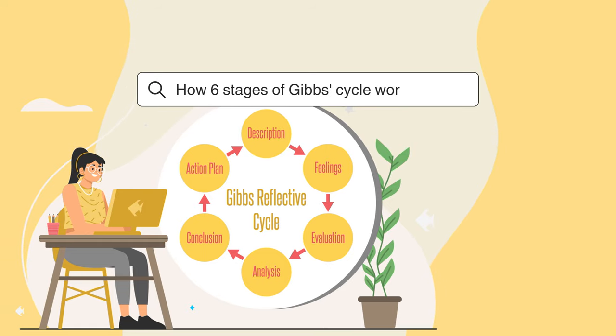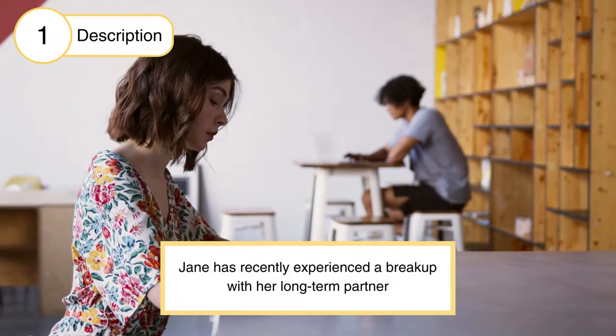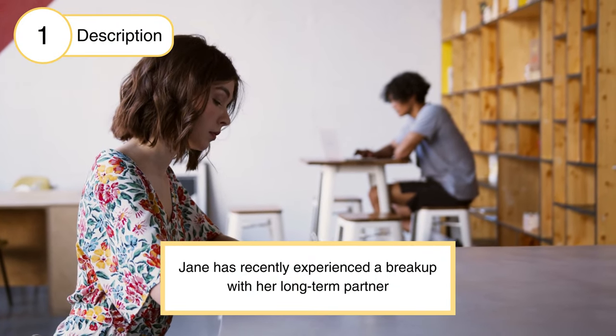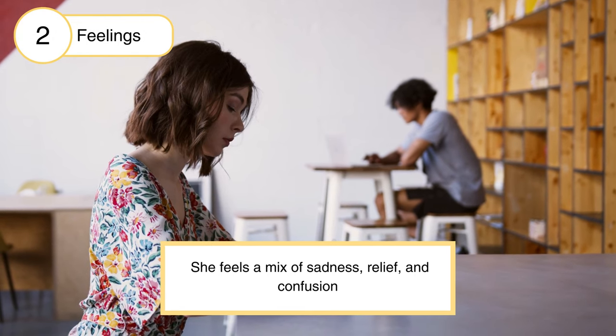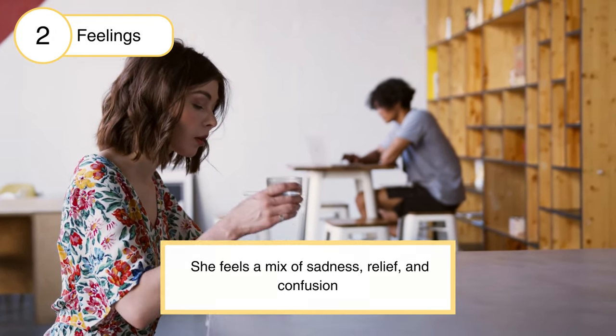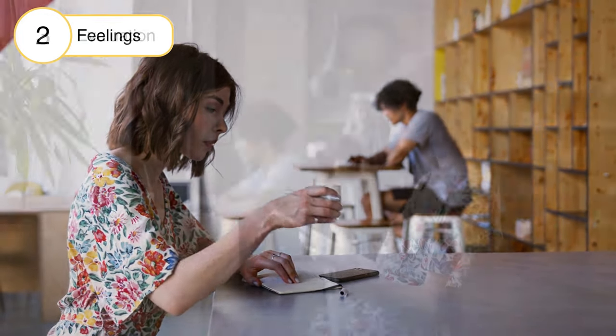Wondering how those six stages work? Let's take a look at the example. Our character, Jane, has recently experienced a breakup with her long-term partner. Jane feels a mix of sadness, relief, and confusion. She misses the comfort of her relationship but recognizes the issues that led to the breakup.